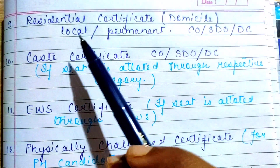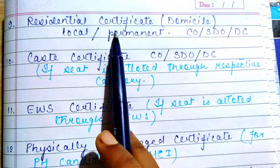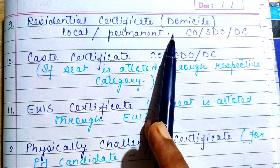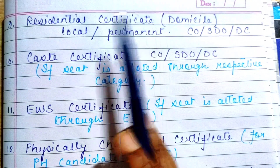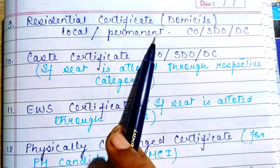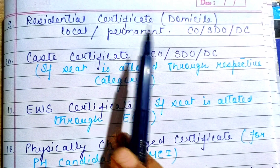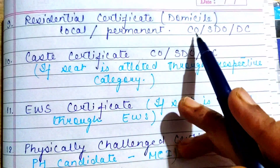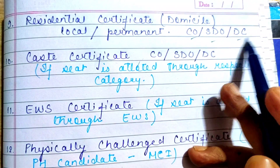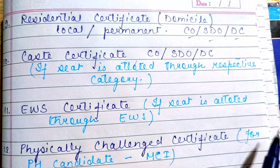Next, you need a Residential Certificate, which is also called a Domicile. It can be a local residential or a permanent residential certificate. This should be issued at the CO level, SDO level, or DC level — any of these levels will be accepted.